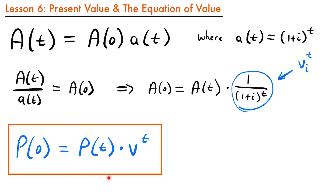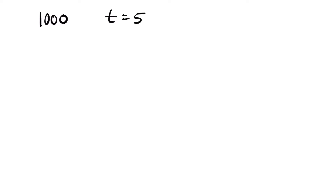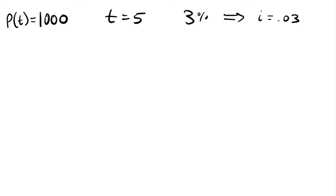So let's learn how to use this formula by looking at an example. Let's say that I wanted to have $1,000 after five years in an account that is going to earn 3% interest — meaning our i equals 0.03 — and that is a yearly compounded rate. The question is: how much do I need to deposit today to accumulate up to $1,000? This $1,000 is going to be our present value at time t equals five. Let's pull out our present value formula.